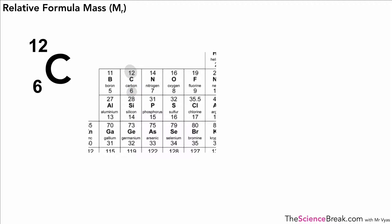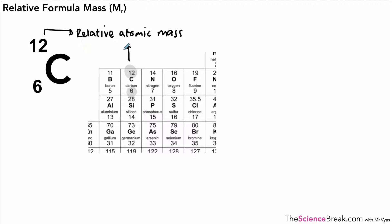Anytime you look at an atom in the periodic table you'll see a number at the top called the relative atomic mass. This tells us the number of protons plus the number of neutrons present in the nucleus of that element — so for carbon, protons plus neutrons equals 12.